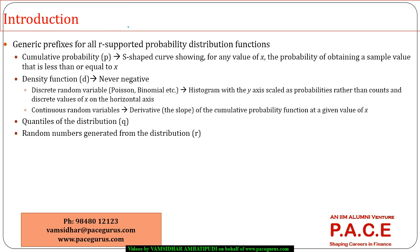Generally, whether it is continuous or discrete, whatever the distributions are, in R there are four sets of functions. R supports four sets of prefixes. In some cases you can give a prefix as D, in some cases it could be P, it could be Q, or it could be R.